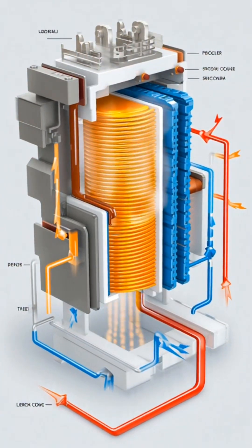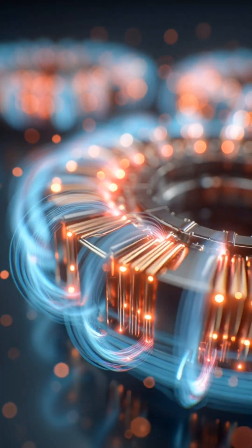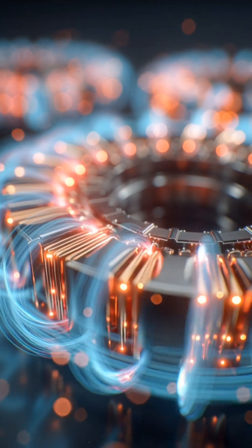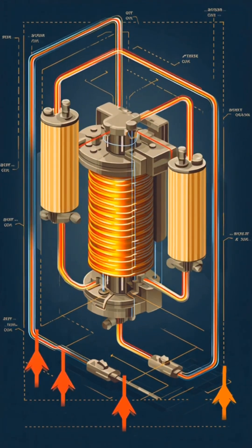If the secondary coil has more turns, it's a step-up transformer and voltage increases. If it has fewer turns, it's a step-down transformer and voltage decreases.